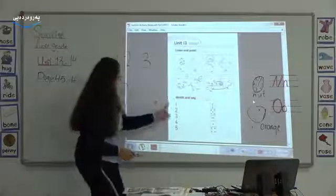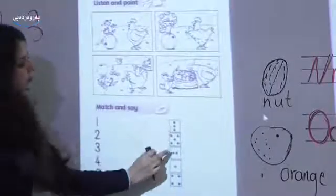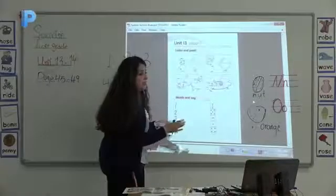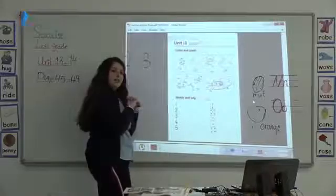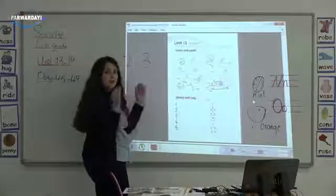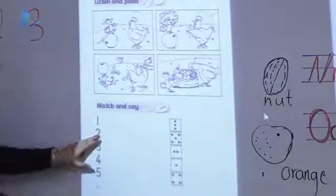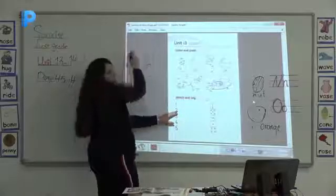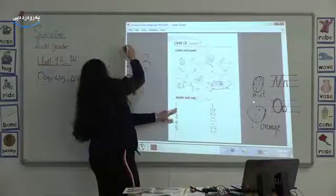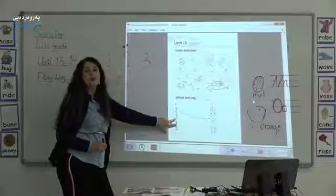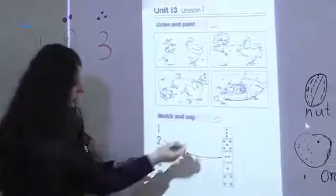Okay, unit 13, unit 13 — listen and take, listen and speak. We should match them together. This is 2 — number 2, we should have 2 dots. Okay, 3 — how many dots do we have? 3. We should have 3: one, two, three. Match them together.